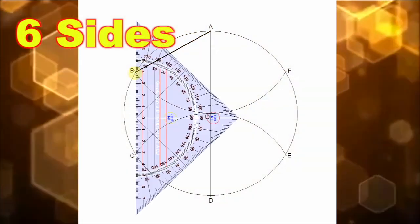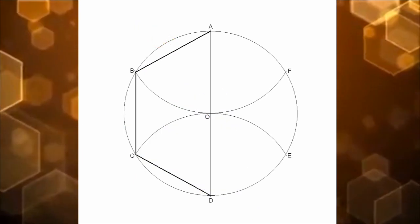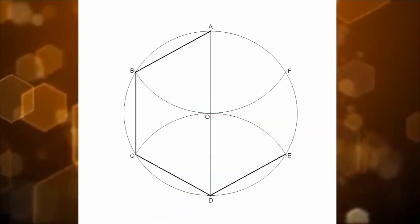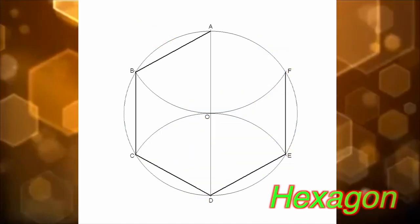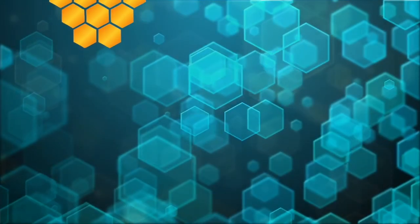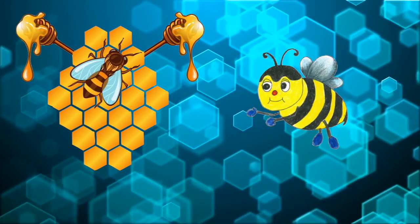We cut another circle into six equal pieces. Notice the six sides. This shape is called a hexagon. Bee honeycombs are hexagons.